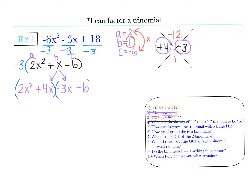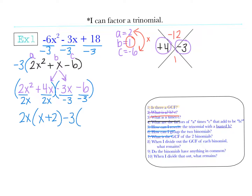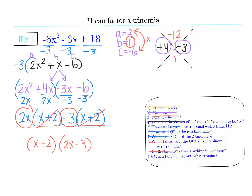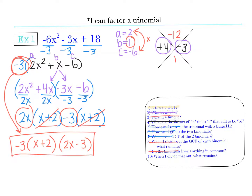The GCF of the first binomial is 2x, and the GCF of the second is negative 3. When I take out 2x: 2x squared divided by 2x is x, and positive 4x divided by 2x is 2. Then I took out a negative 3: negative 3x divided by 3 is a positive x, and negative 6 divided by 3 is a positive 2. Now I have x plus 2 in common. When I divide that out, what remains is 2x and minus 3. And I can't forget that I took out a negative 3 to begin with, so that negative 3 comes down, and that is my factored trinomial.